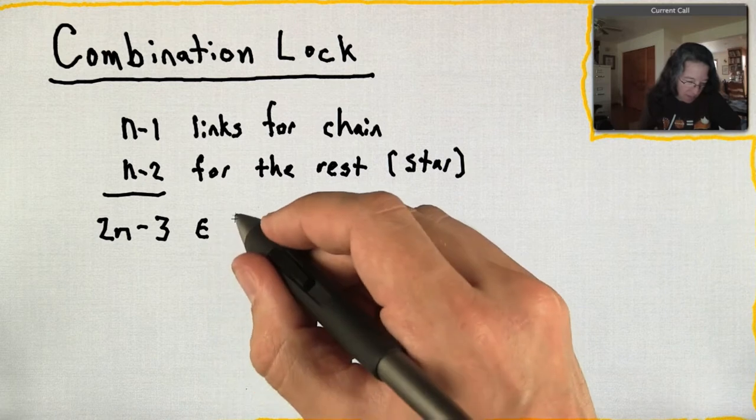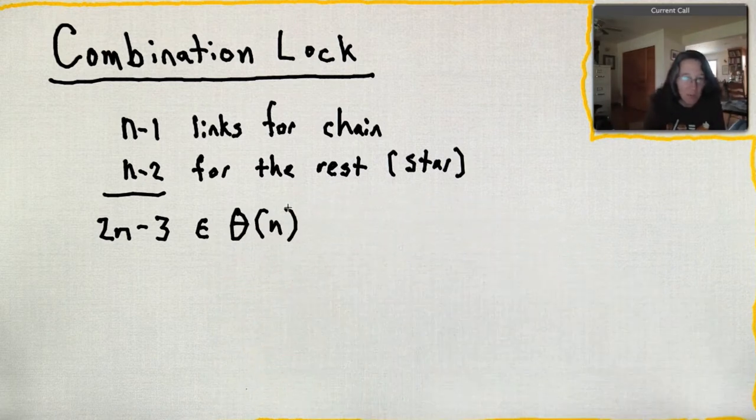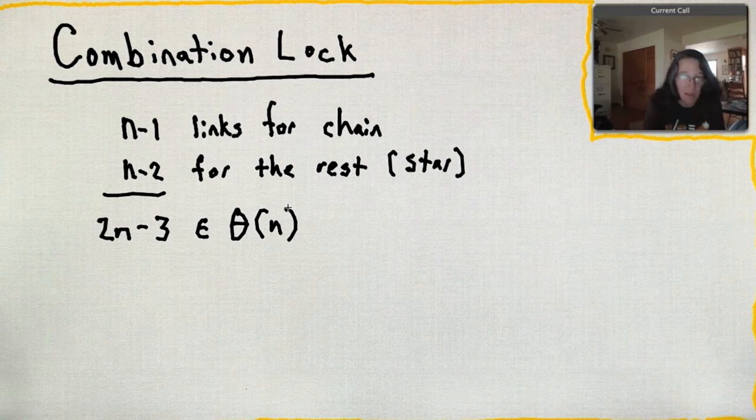I didn't write down a whole lot on that because that one was straightforward. It was less than 2n for the combination thing, so it has to be theta of n.